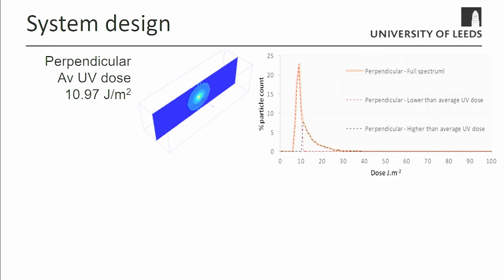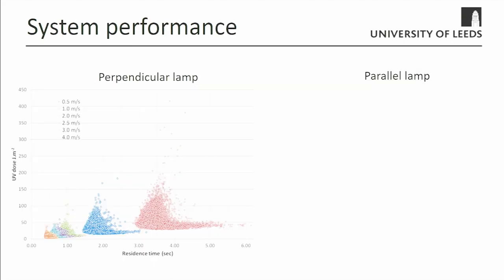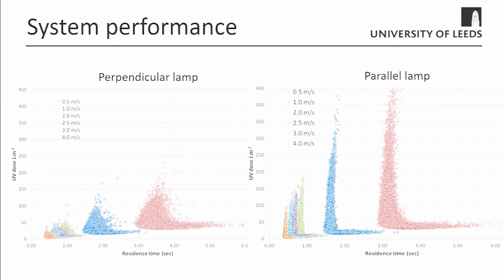We can also model the lamp in a different orientation — parallel to the duct rather than perpendicular — and we get a different average dose with exactly the same lamp just by changing orientation. We get a slightly different distribution: some particles with very high doses have low residence times and go close to the lamp, while others with very low doses are a long way from it. Without the modeling, you can't unpick this at all. It's not 100% perfect, but it tells you something about what you should be looking for and how the system works.